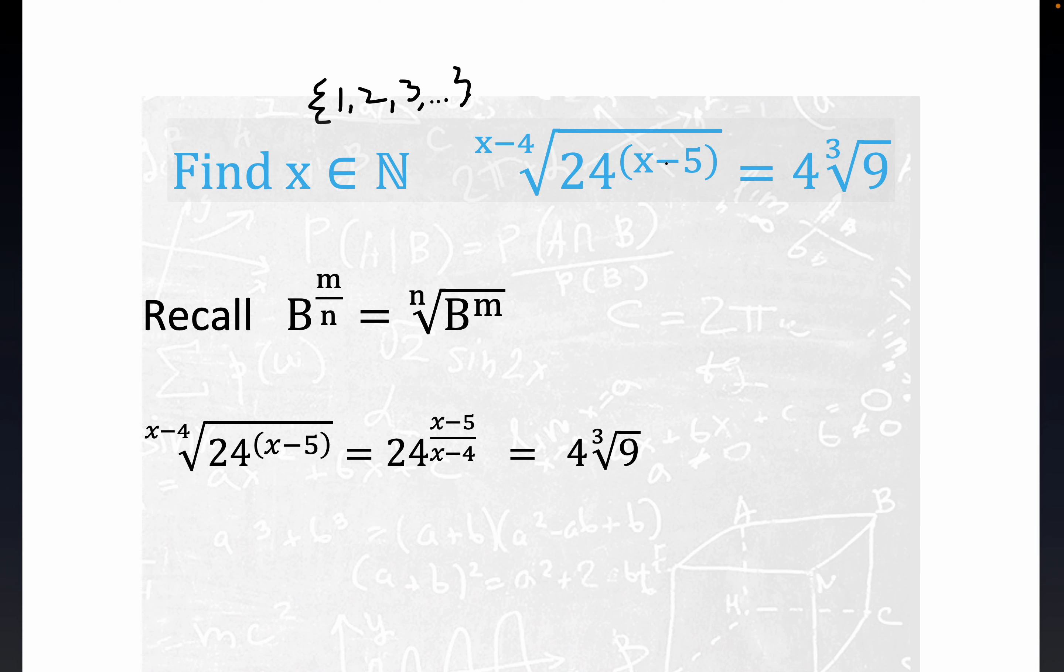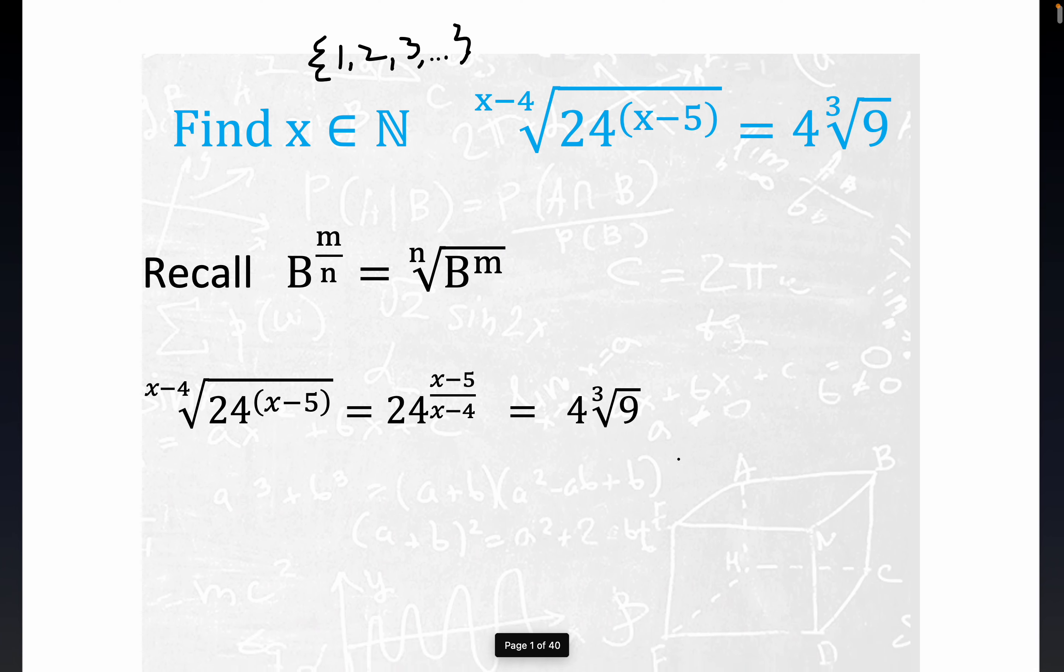Notice we do have a variable index here and a variable power. We're looking for a single solution here. These properties of rational exponents relating them back to radical notation is quite useful right here. The x minus five would be behaving like the m in this expression and of course x minus four is the n. We can write it this way which turns out to be quite useful as I'll try to illustrate here.